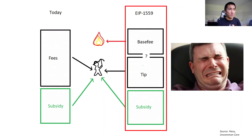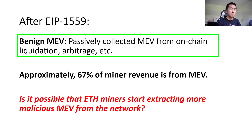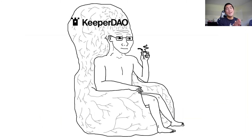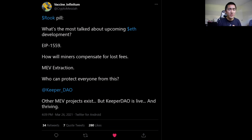Miners who feel entitled to their pre-EIP-1559 revenue raise an interesting question: could ETH miners start extracting more malicious MEV now that MEV makes up the majority of their mining revenue? Could Ethereum miners be incentivized to start creating trading bots that front-run opportunities to raise the MEV they extract from each block? It's a valid question, and ultimately this is the problem that the KeeperDAO team is trying to solve. In a world where MEV extraction is congesting the network, keepers need to cooperate and share profits with each other — not the miners.